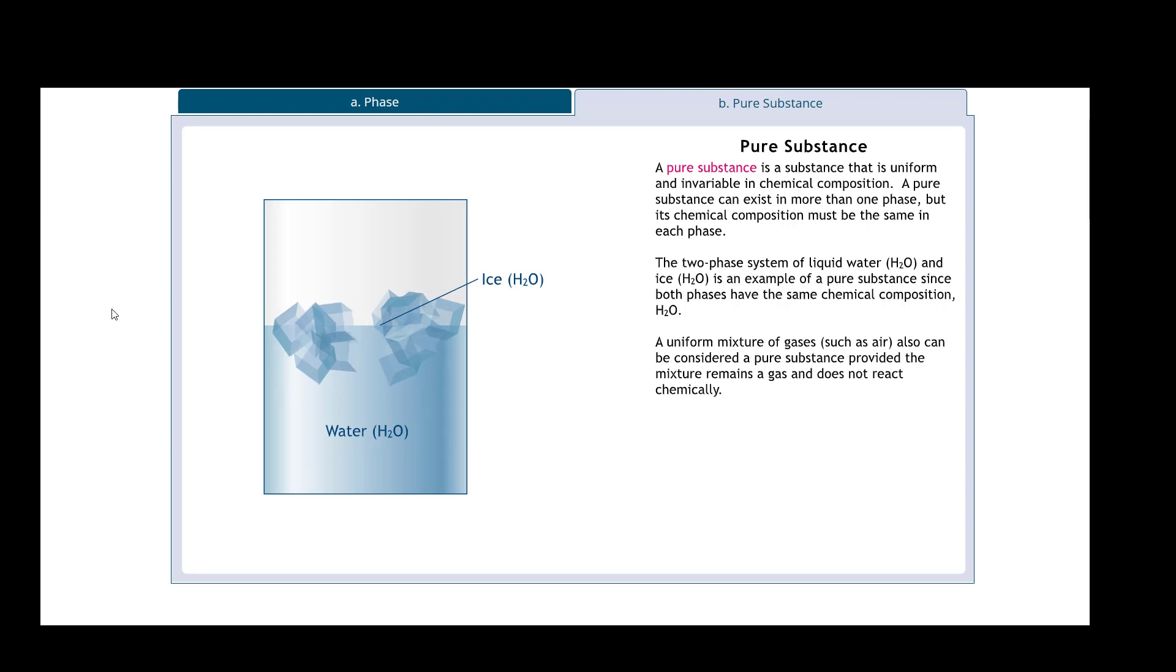A uniform mixture of gases such as air also can be considered as a pure substance provided that the mixture remains a gas and does not react chemically. So this one is also a little bit of a caveat. The gas can be a pure substance, but it needs to be on its own and isolated from anything else to ensure that it does not react or mix with something else to chemically change the compound. Because you can't just keep gas in a cup, right? It's not like you can just hold liquid water or solid water. It's gas, so you have to enclose it and ensure that it is staying just to itself.